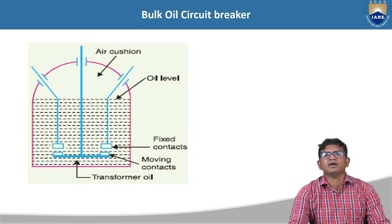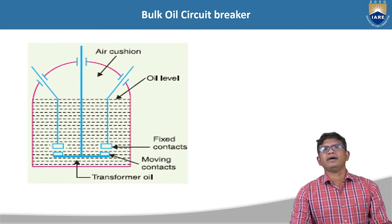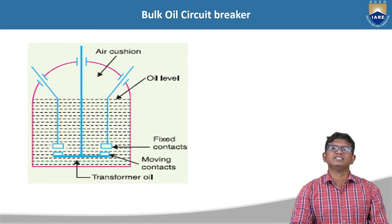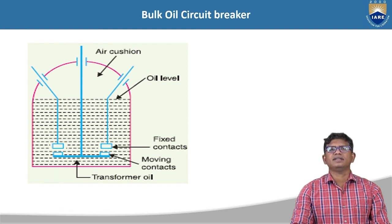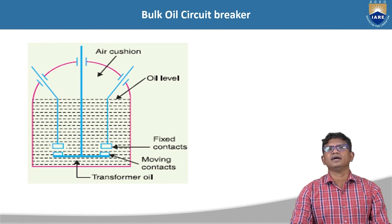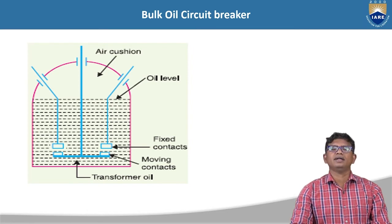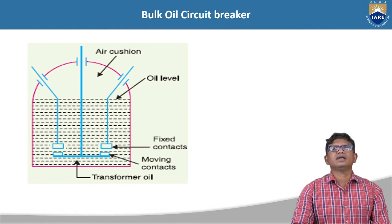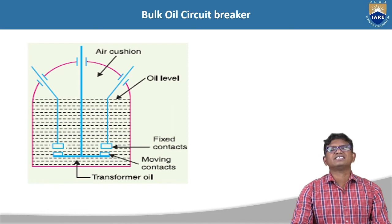The bulk oil circuit breaker is a tank consisting of fixed contact and moving contact. The tank is almost completely filled with oil. At the top of the tank, there is an air cushion above the oil level. The air cushion provides sufficient room for the gases generated during the operation of the circuit breaker.